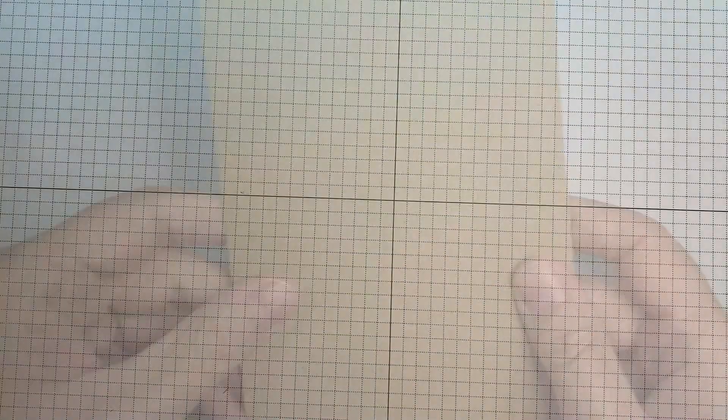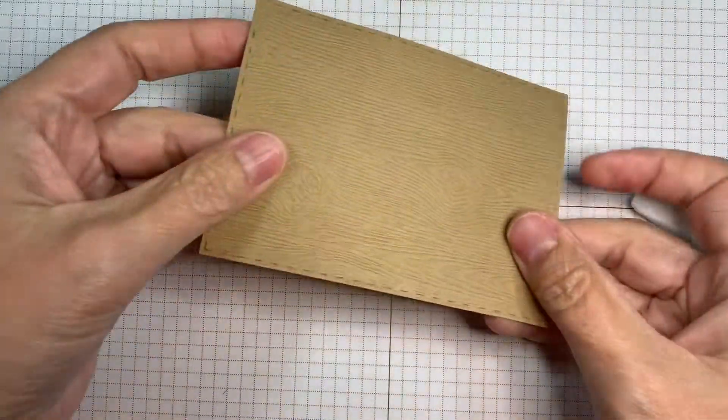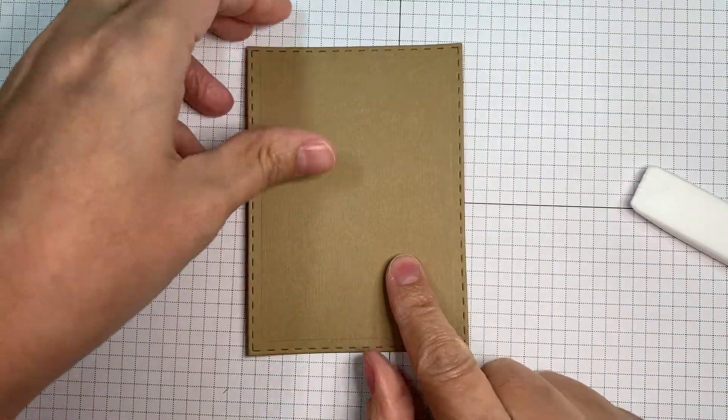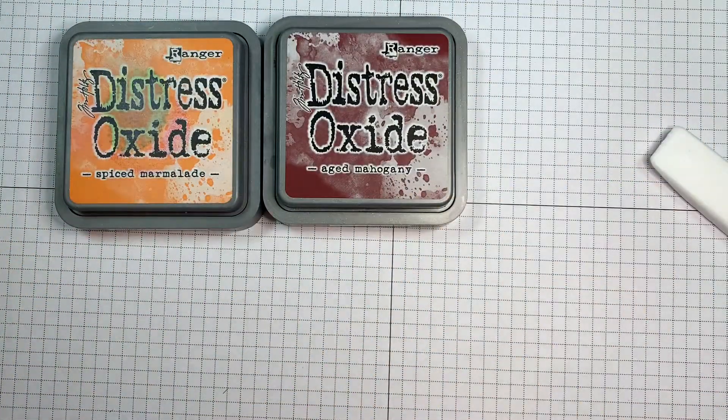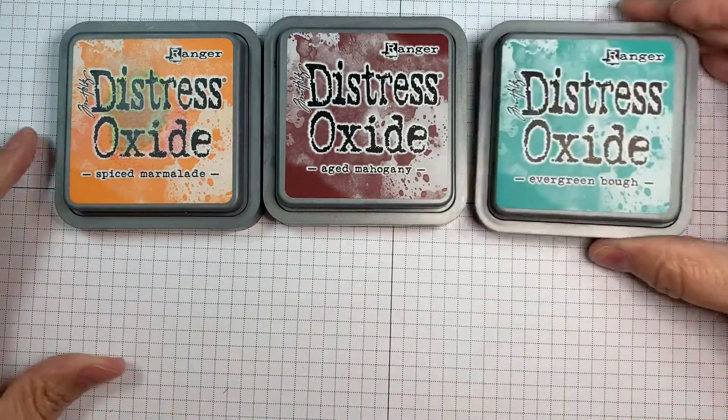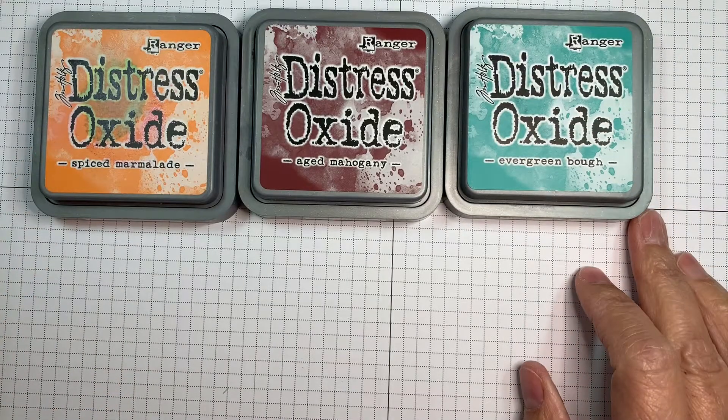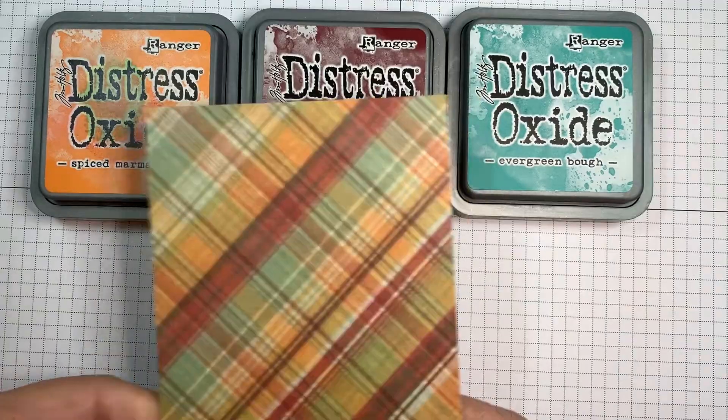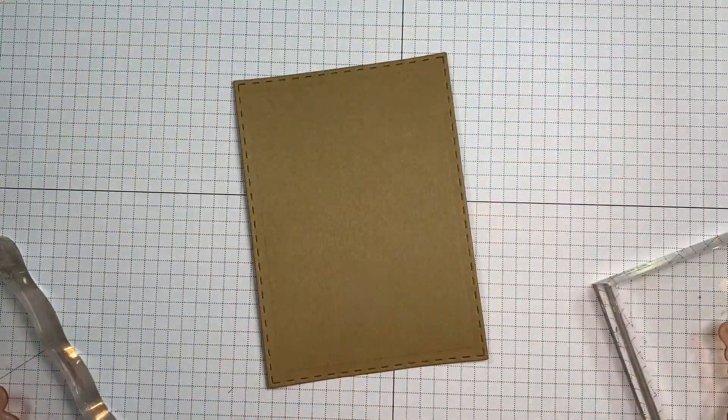It's basically time for another Jaded Blossom challenge and this one's called Falling for Fall, so it's a fall themed. I'm making a quick fall card for you today. I'm using Distress Oxide inks in Spiced Marmalade, Aged Mahogany and Evergreen Bough. I'm also using We Are Memory Keepers Autumn Splendor 12-inch paper pad.